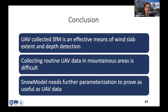In conclusion: I conducted 28 total flights and concluded that UAV-collected Structure from Motion is an effective means of wind slab extent and depth detection, as shown by the maps. I invite you to check out the Google Earth Engine app to click around the orthomosaics and see how things change through the days. Collecting UAV data routinely in a mountainous area — especially Mount Washington — is very difficult and labor intensive, which is why the snow model is the missing piece. But in order for it to be used operationally, it needs further parameterization to be as useful as the UAV data.